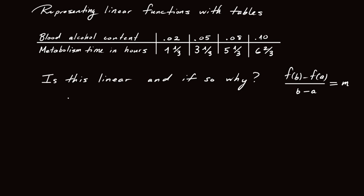So let's check some average rates of change. Let's first choose say a to be 0.02 and b to be 0.05. In that case f of a is one and a third, f of b is three and a third. So I get f of b minus f of a over b minus a. Well, I get three and a third minus one and a third, which is just two. And then b minus a is 0.05 minus 0.02, which is 0.03.